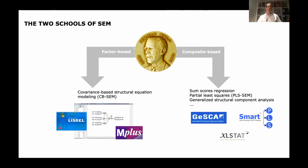In composite-based SEM, the concepts are not represented by factors but by composites. With factors we use the common variance to identify constructs, whereas with composites we use linear combinations of indicators to actually compute scores of these constructs. These scores are then representations of the underlying theoretical concepts.